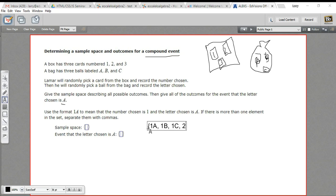And we could pick a two and then an A or a two and then a B and then a two and then a C. And we can also pick a three and an A, a three and a B and a three and a C. And I think that's all the possible events. So this is our sample space.